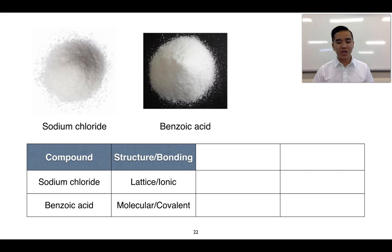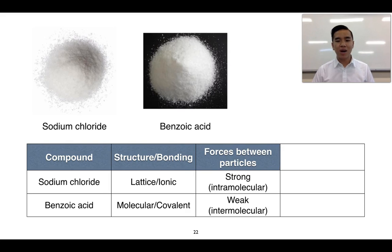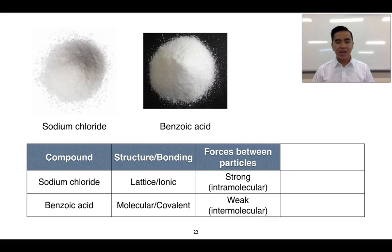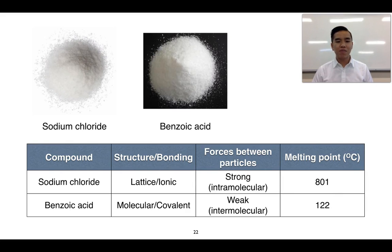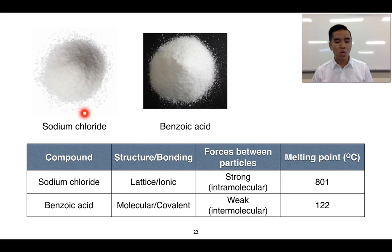Using this information, we can look at the strength of attraction between the particles. Sodium chloride, with its strong ionic bonding, is going to be quite strong. For benzoic acid, because we are dealing with molecules, the forces between them are generally weak — the weaker intermolecular forces. So we would expect sodium chloride to have a high melting point and benzoic acid to have a low melting point, as we can see from the data. It's important to note this because both of these appear as white crystalline solids, so we use physical properties to help predict the structure and bonding.